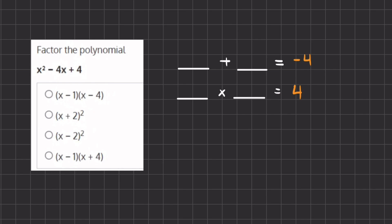Now if we want two numbers to add up to negative 4, that could be negative 2 and negative 2. And these two numbers, when you multiply them, they also multiply to a positive 4.